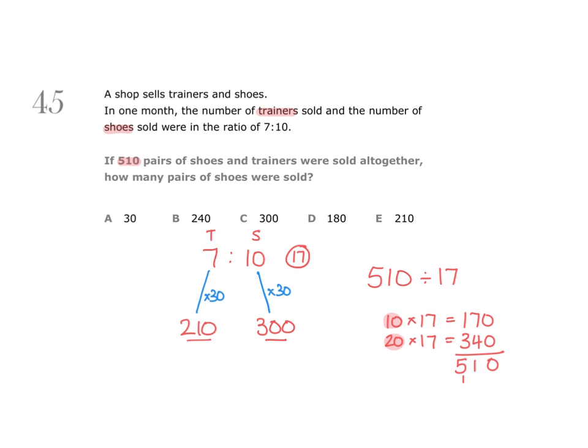The question asks how many pairs of shoes were sold, and you can see that in total 300 pairs of shoes were sold, making option C the right answer.